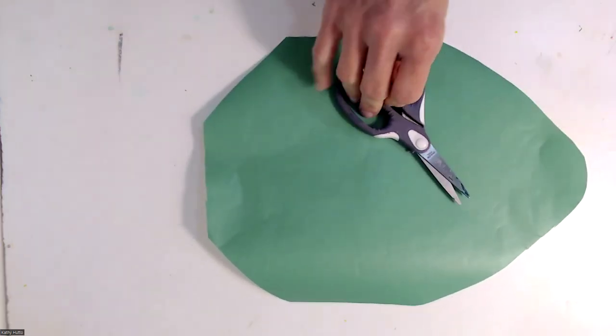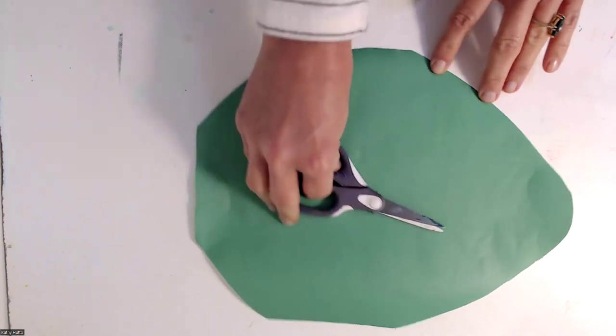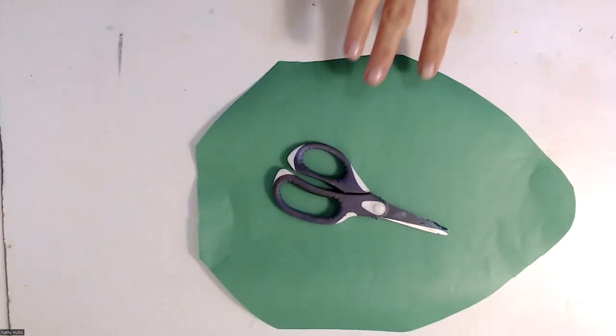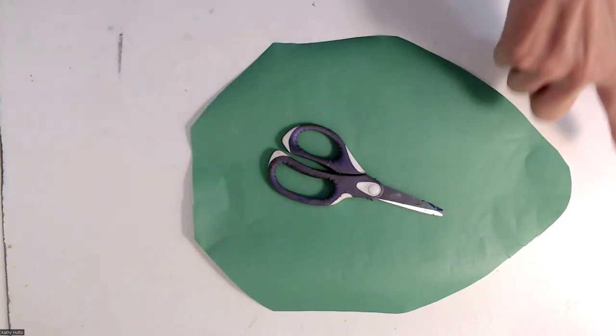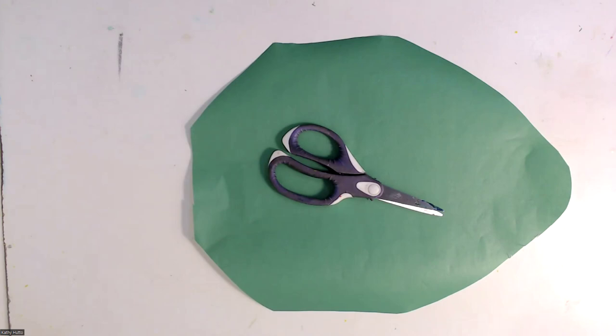Okay, so there it is. That's the head. We just cut off the two corners and rounded off that snout. All right, so now we're going to put this away.